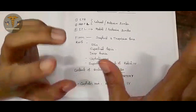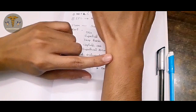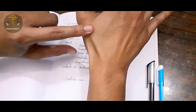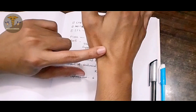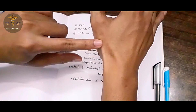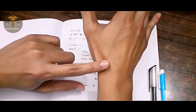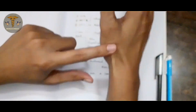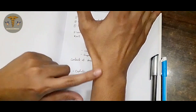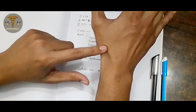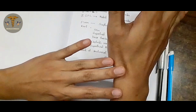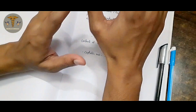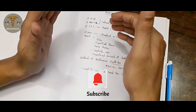To summarize the anatomical snuff box: the anterior or lateral border is formed by abductor pollicis longus and extensor pollicis brevis; the medial or posterior border is formed by extensor pollicis longus. The floor is formed by the scaphoid and trapezium bones. The roof is formed by skin, superficial fascia, the cephalic vein, and the superficial branch of the radial nerve. The content is the radial artery, which can be palpated against the scaphoid bone, and the cephalic vein is used for IV cannulation. Thank you.